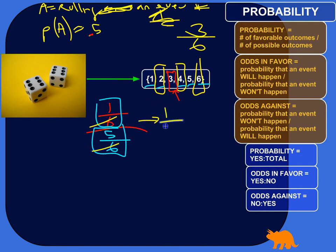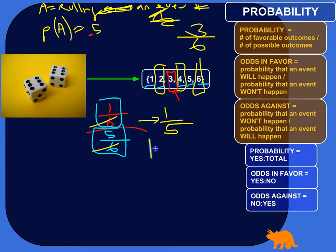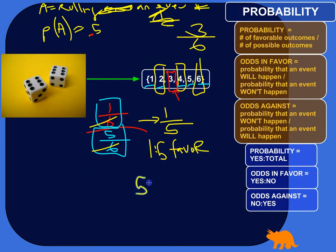So the odds in favor of rolling a three would be one to five. The odds in favor of rolling a three are one in five, or one to five. And odds against — it's just the other way around. The odds against rolling a three are five to one.